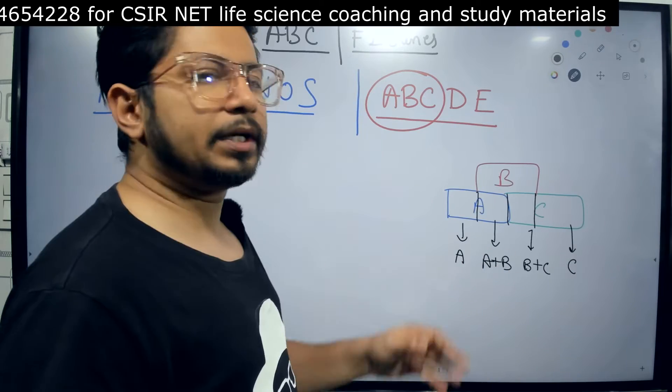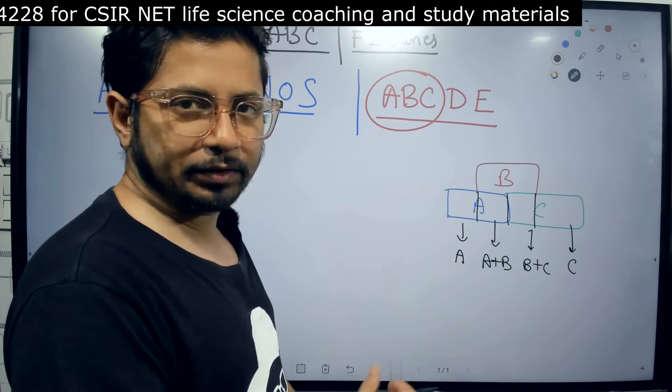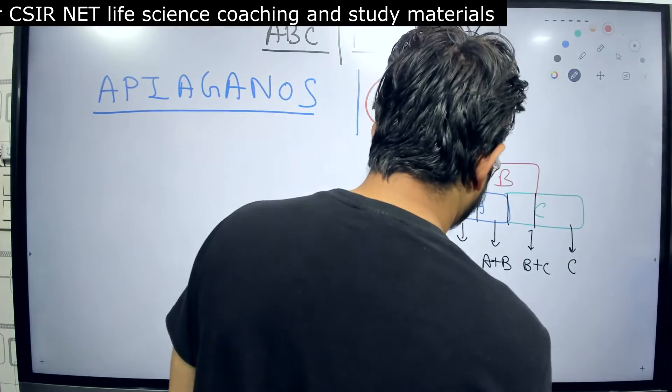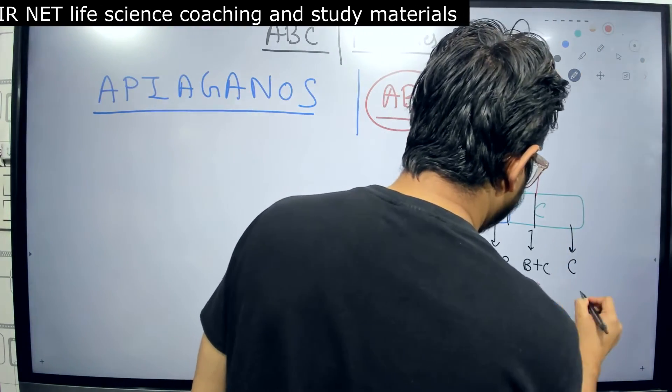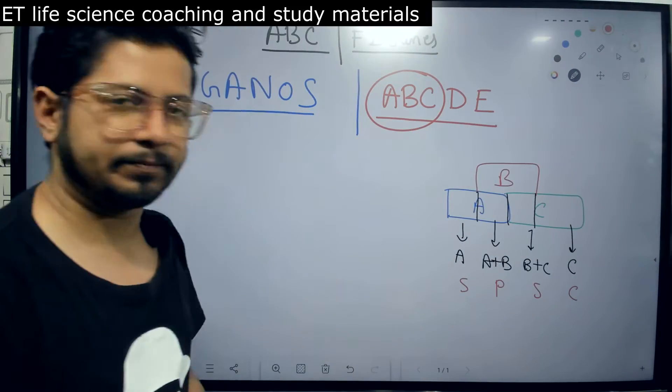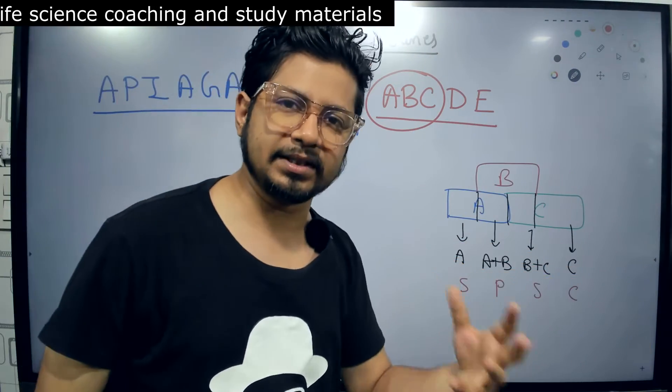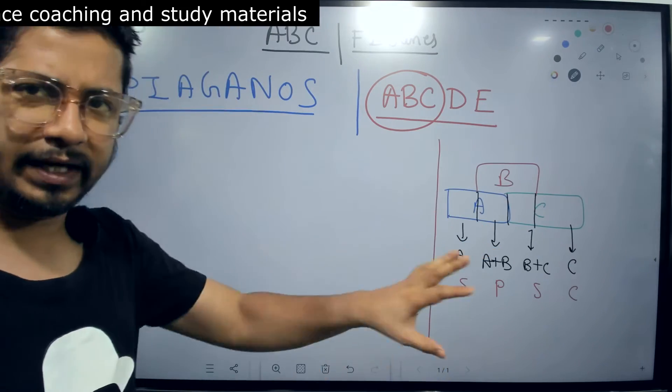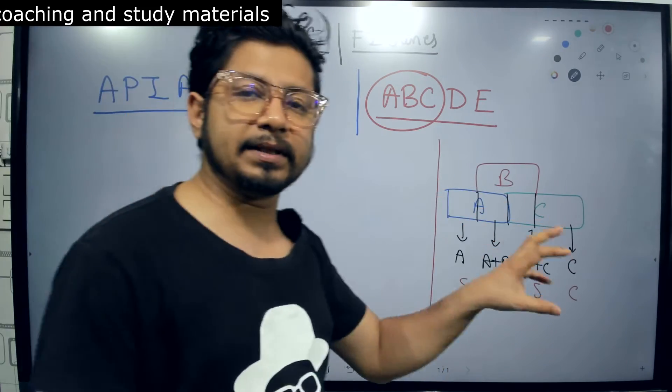The combination of A, A plus B, B plus C, and C will give rise to different whorls of the flower, and they are sepal, petal, stamen, carpel: S, P, S, C. This is how easy it is to remember the ABC model of flowering.